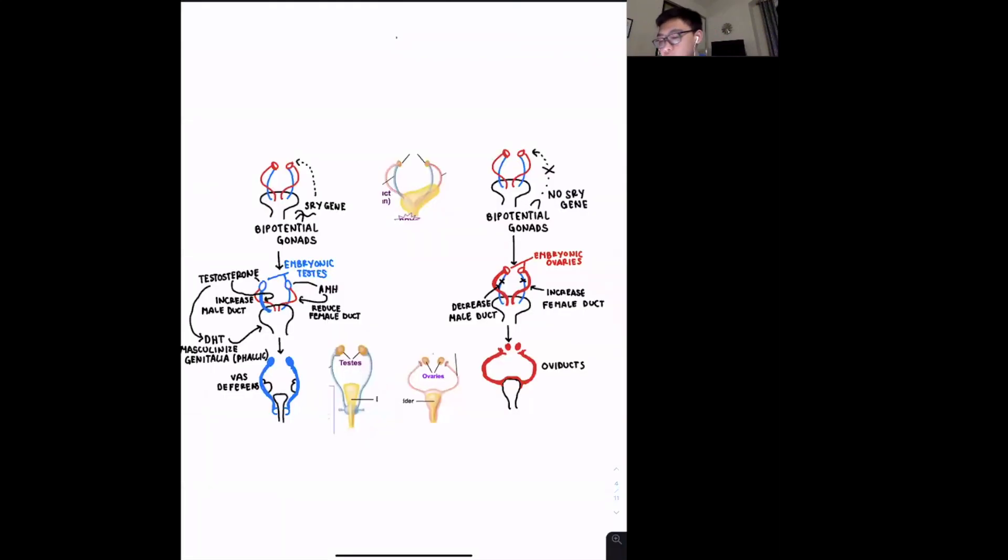So the gonad determination is essentially when we're taking an embryonic sex organ and we're determining whether it's going to become the male reproductive organs or the female reproductive organs. And so they both start off at a similar point, it's called the bipotential gonads, it's this alien-looking structure right here.